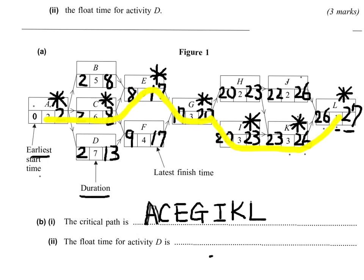Now we're going to look at the float time. So I'm going to use example F here. Now F starts on day 9 and takes 4 days. So 9 plus 4, actually it finishes by the 13th day, but F got till day 17 to complete this task. So actually 17 take away 13 is 4, 4 days float time.